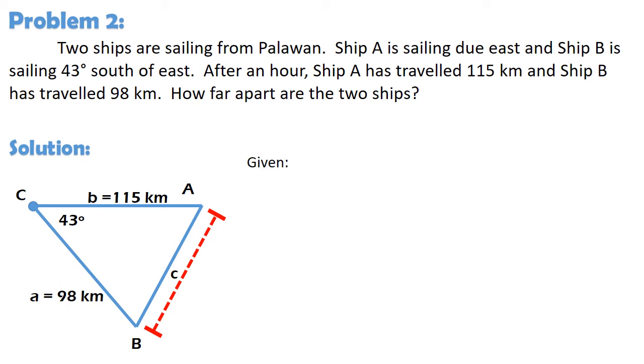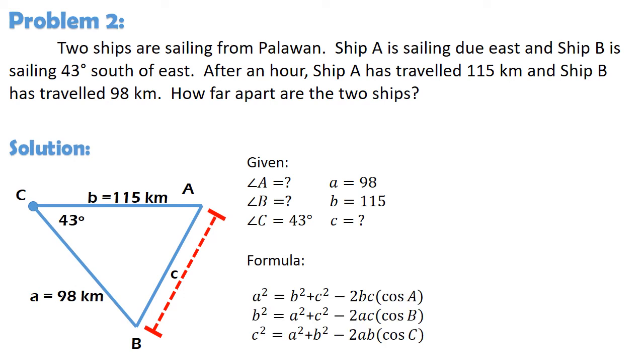To summarize our given, we have no information for angle A at ang side a naman ay 98 kilometers. We have no information for angle B at ang side b naman ay 115 kilometers. And we have angle C which is 43 degrees and no information for side c. Kung mapapansin ninyo, wala tayong isang pares ng angle at side kaya hindi natin ma-apply dito ang law of sines. Dito natin ma-apply ang law of cosines. Mayroon tayong tatlong formula sa law of cosines. Ano kaya ang ating pwedeng gamitin? Balikan natin yung given. Ang hinahanap natin ay side c at ang mga given natin ay side a, side b at ang nag-iisang angle na angle C. Kaya naman, ang pwede natin gamitin na formula ay